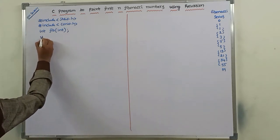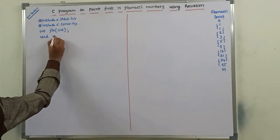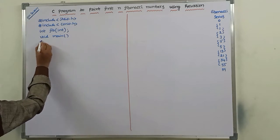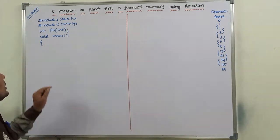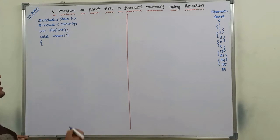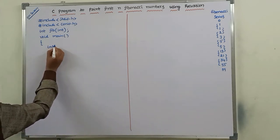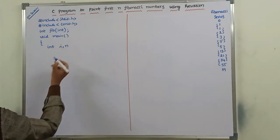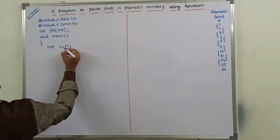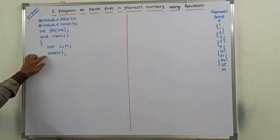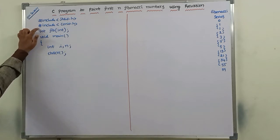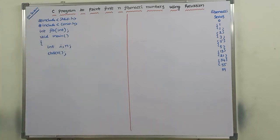Next, void main. In every C program, execution starts with the main function. We declare two variables: int i, n. Then clrscr() — this is the clear screen function, used to clear the output screen. This function is available in the header file conio.h, so we must include it.